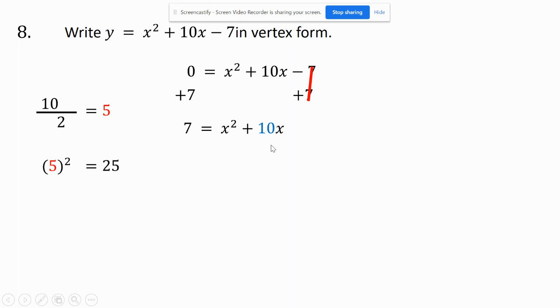I'm going to square the 5, so I need to add 25 here, but if I add 25 to one side, I have to add it to the other. So that means I now have (x + 5)². I have this 32, so I need to minus 32 to write it in vertex form.